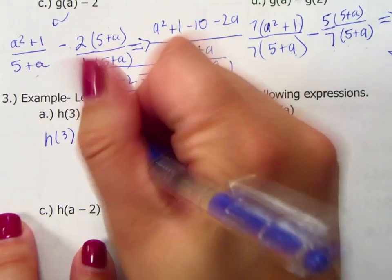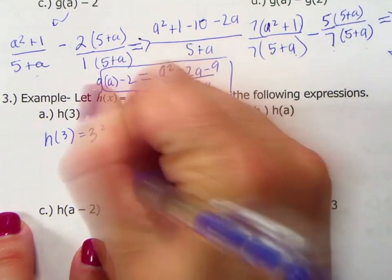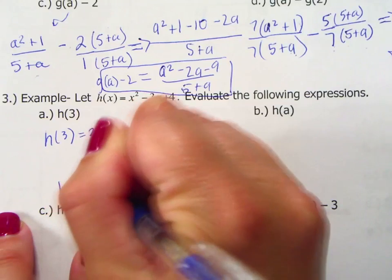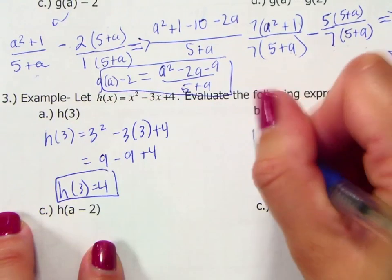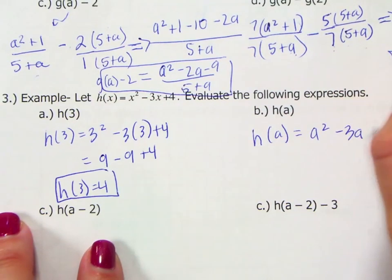h(3) should have been 3 squared minus 3 times 3 plus 4, which is 9 minus 9 plus 4. So h(3) equals 4. For h(a), this should be a squared minus 3a plus 4.